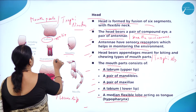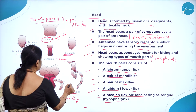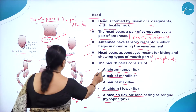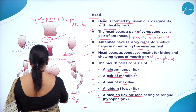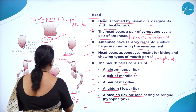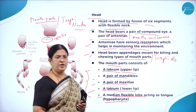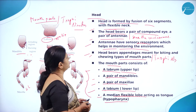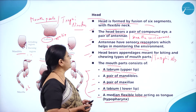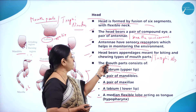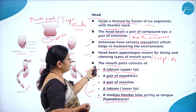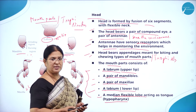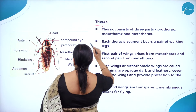Here you can see the hypopharynx acting as a tongue, the mandibles, labrum as the upper lip, labium as the lower lip, and the first and second maxillae which hold the food items. To summarize: mouth parts consist of a labrum, a pair of mandibles, a pair of maxillae, a labium, and the hypopharynx. These are very important from an examination point of view.